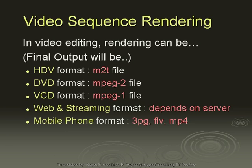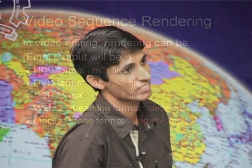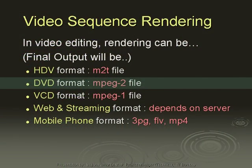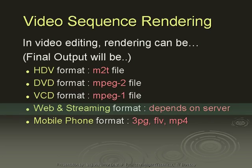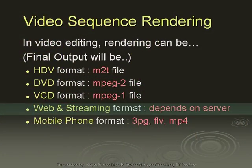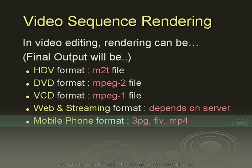Come to video sequence rendering. In video editing, the final output can be in different formats: SDV formats, M2T file. Suppose you want to create a high-definition digital video disk, then choose the M2T extension. It is based on MPEG-2 higher-level rendering, so use M2T extension. M2T is an extension of MPEG-2 file but at a higher level of video. DVD format uses MPEG-2 file, VCD format uses MPEG-1 file. For web and streaming purposes, you should check which server you are using. There are lots of servers available to stream video, and the format depends on the server. Mobile phone formats include 3GP, FLV, and MPEG-4.